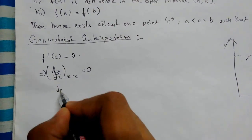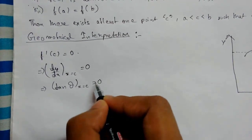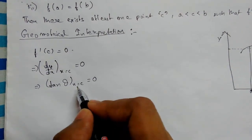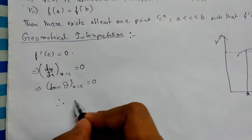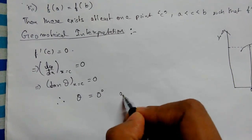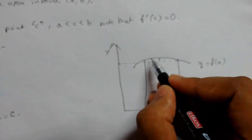dy/dx can also be written as tan θ at x equals c equals zero. And tan θ equals zero, therefore θ is also zero degrees at x equals c.